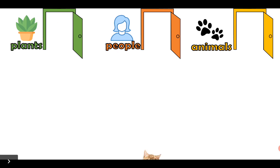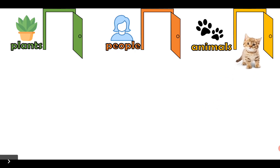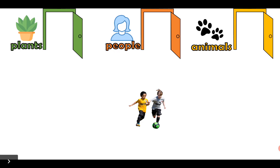And what type of living thing is this? Is it a plant? Is it a person? Or is it an animal? Good job! It's an animal! Bye-bye, animal! What type of living thing are these two children? Are these plants, people, or animals? Very good! They are people! Bye-bye, people!